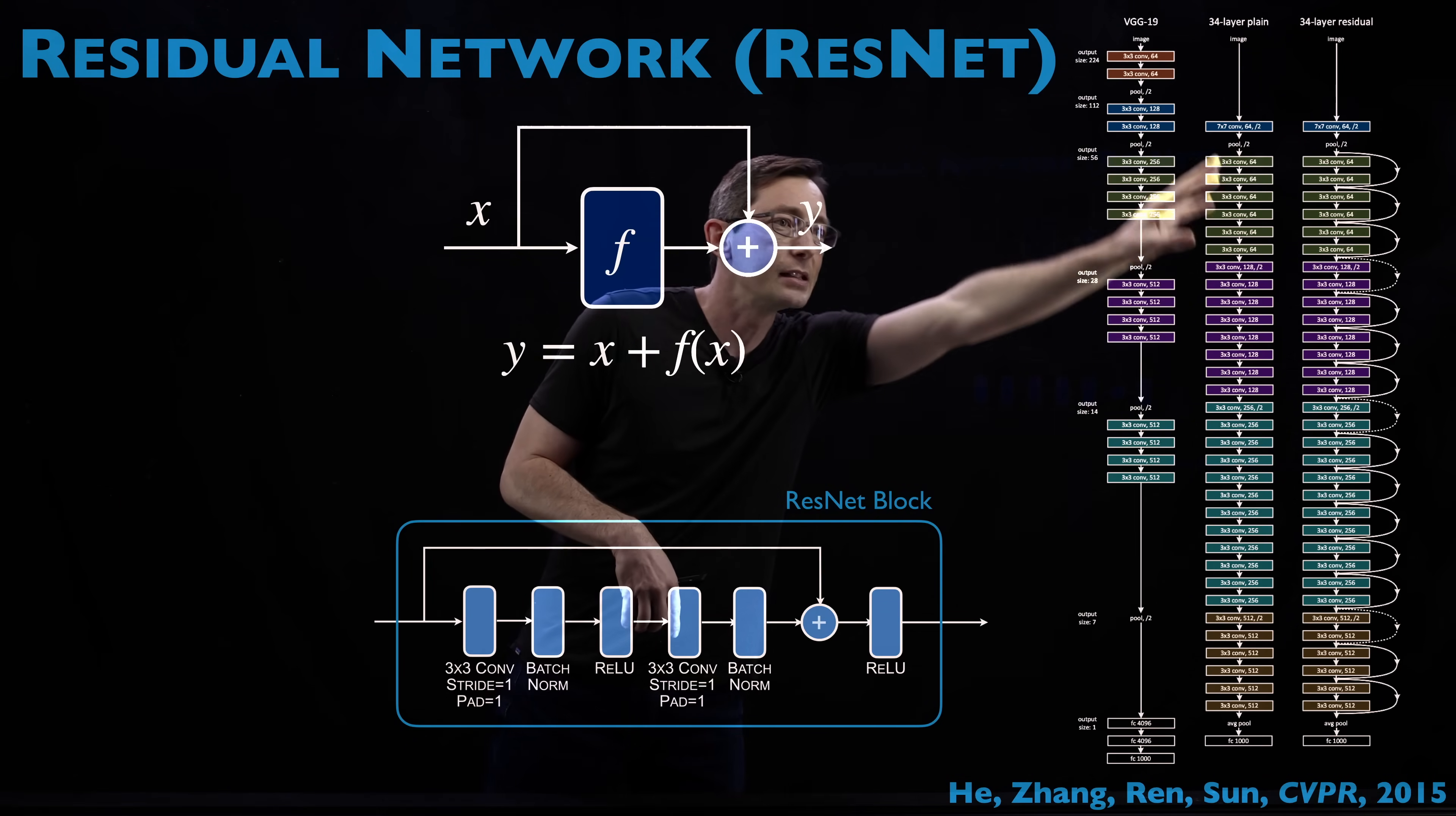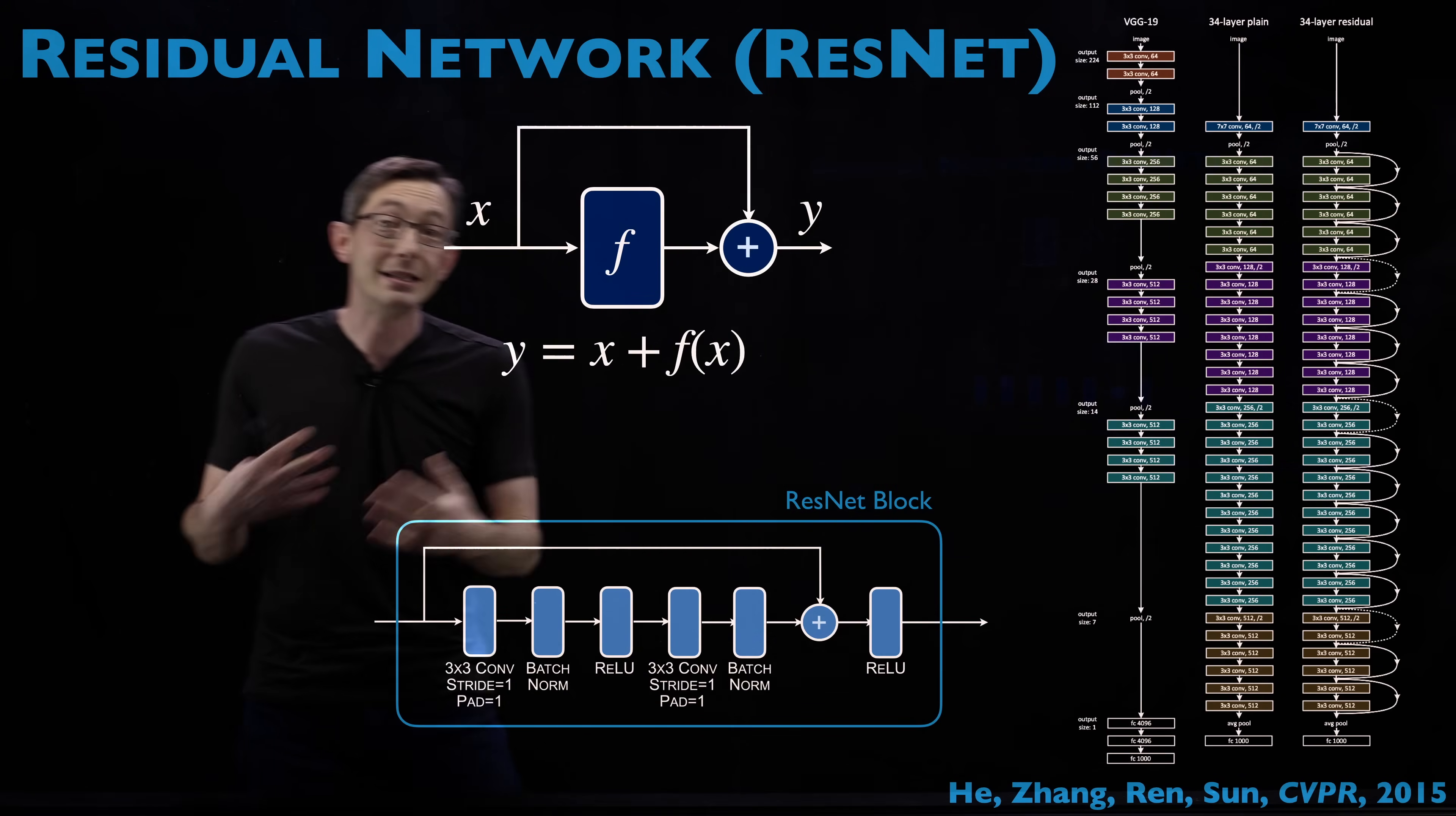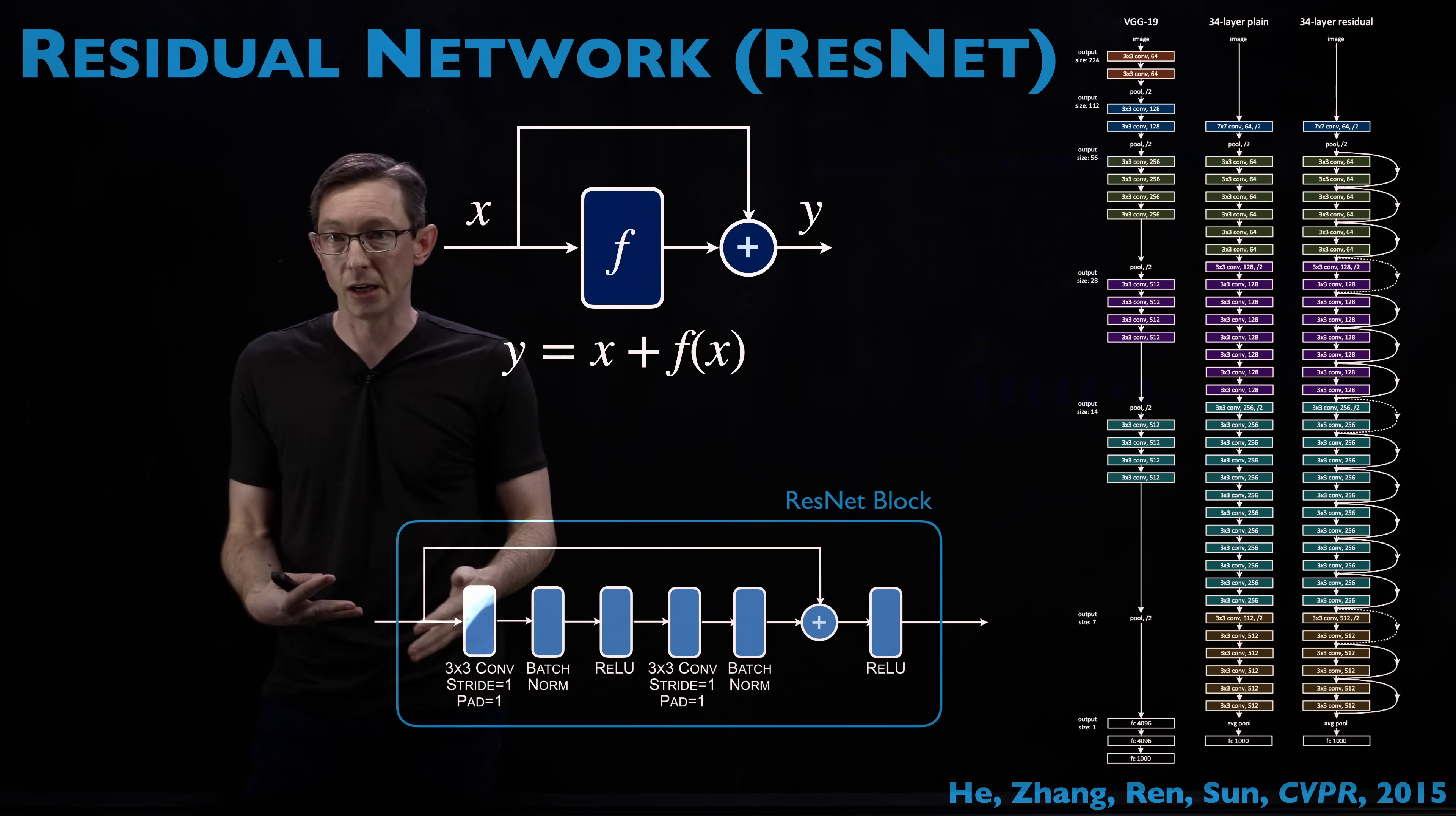And so this is a schematic of the ResNet architecture used in this CVPR 2015 paper. You can see that it's super deep, right? 34 layer plain, 34 layer residual, really deep network, deeper than other networks at the time had been able to achieve and train reliably. So that's one of the huge benefits of these ResNets is that you can go deeper, which we know gives us more expressive capability for really hard problems if we have enough training data and computational resources.